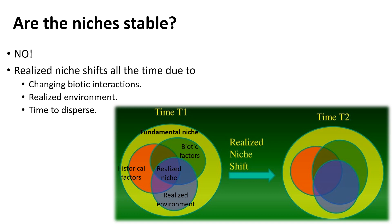So is the niche stable? No, it's not stable — it can change. It depends on biotic interactions, environmental conditions, or time of dispersal. If we compare the biotic factor here, it used to be in one kind of shape, but over time it has changed to become broader. So there is no stability in the niche through time, and that depends on different conditions.